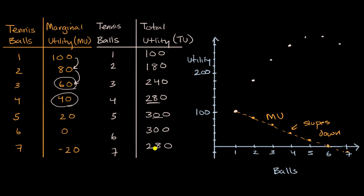And you could see the marginal utilities here if you just say, look, this is plus 80, this is plus 60, this is plus 40, this is plus 20, this is plus zero, and then this is minus 20. And so you see the numbers right over there.